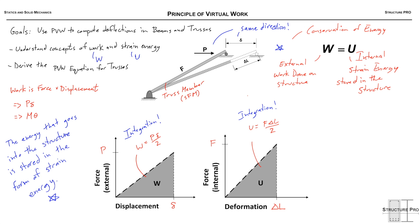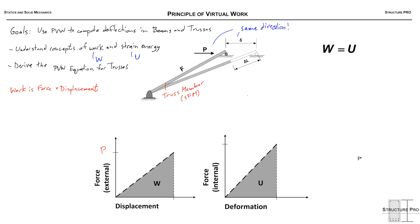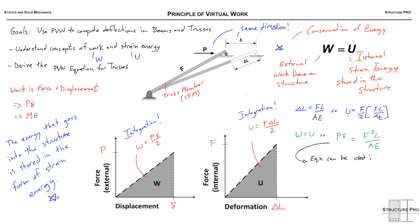We know from an axial loaded bar that delta L can be equated to FL over AE. So we can write U is F over 2 times FL over AE. If we equate this to the work done we come up with this equation: P small delta over 2 equals F squared L over 2 AE. Eliminate the twos and we're left with P small delta equals F squared L over AE. And this equation is useful.